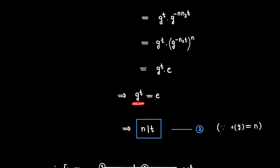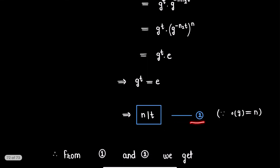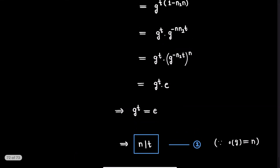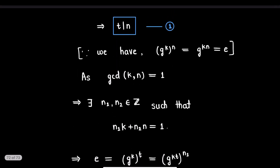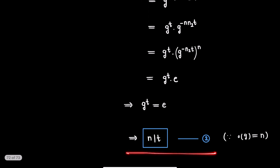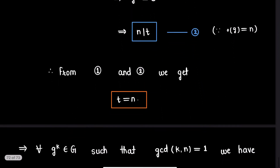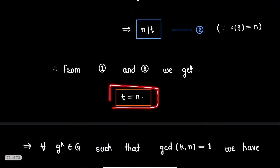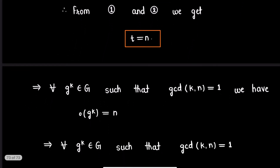Since g is a generator of group G, the order of g is n. Here t is an integer for which g^t equals the identity, so we must have n divides t. We call this expression (2).